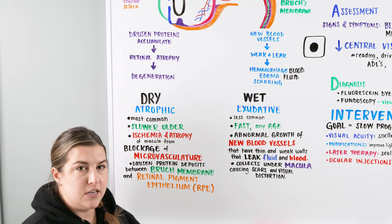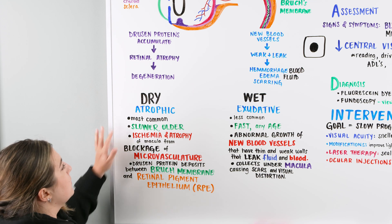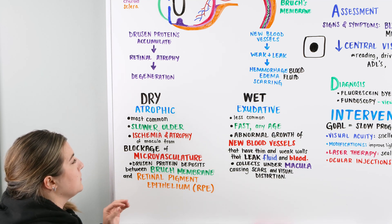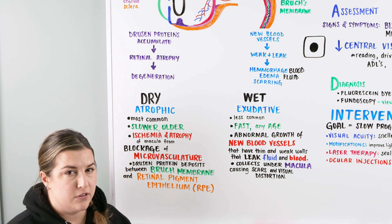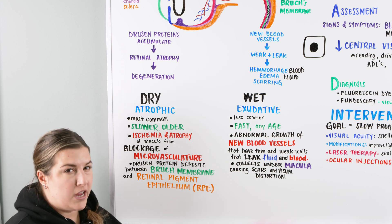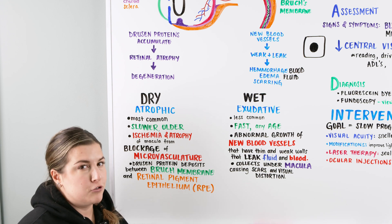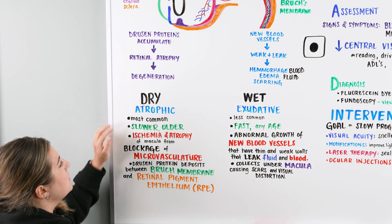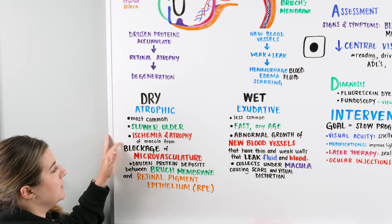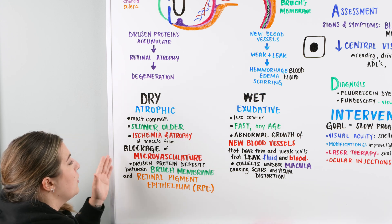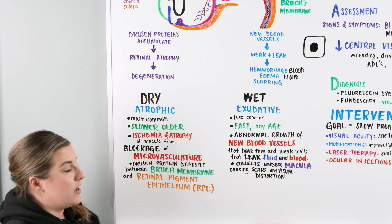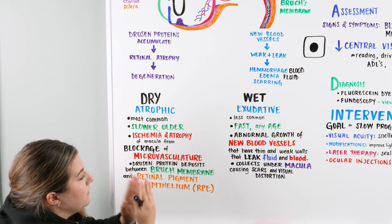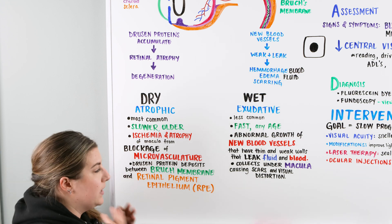Dry is atrophic — it's a decrease in perfusion to the retina. It's the most common type and also the slower, more gradual form. With retinal atrophy, the slower perfusion over time and ischemia to the retina means patients often don't notice it right away because the change in vision is slow — they may think their vision is just getting worse with age. The ischemia or atrophy of the macula can come from those drusen proteins accumulating and causing a blockage in the microvasculature, creating a separation between Bruch's membrane and the retinal pigmented epithelium, impairing the signal to the optic nerve and causing issues with central vision. Dry is also referred to as non-exudative.